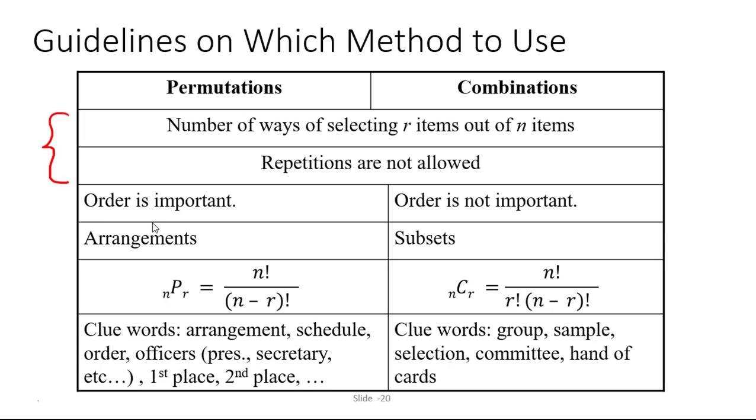But then there's the differences. For permutation the order is important whereas in combinations the order is not. Another word for permutation is arrangement which implies that the order is important and another word for combination is subset and we know that in subsets the order is not. The formula for permutation is nPr equals n factorial over n minus r factorial and the formula for combinations is n factorial over r factorial times n minus r factorial.